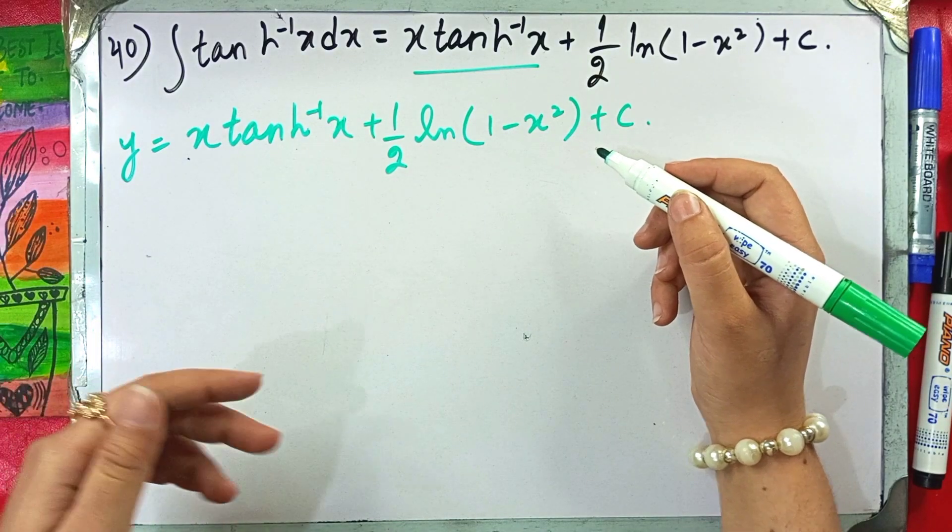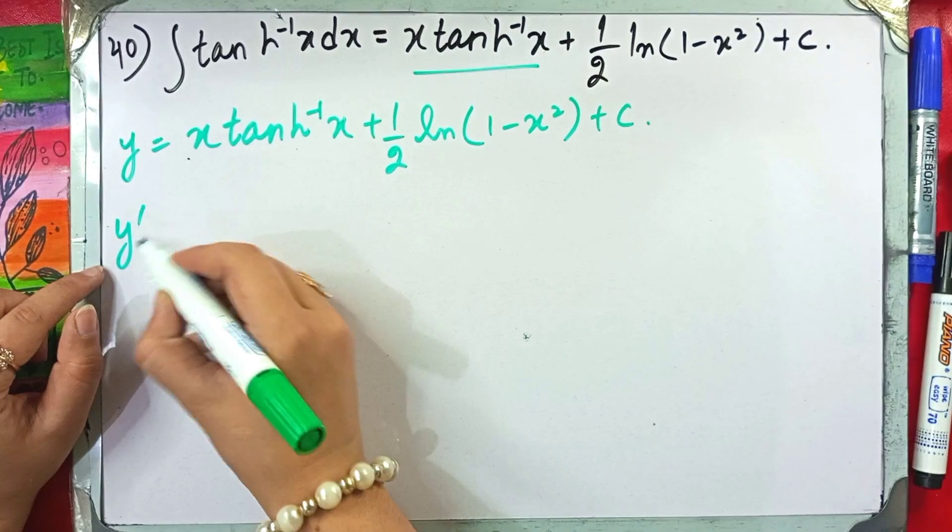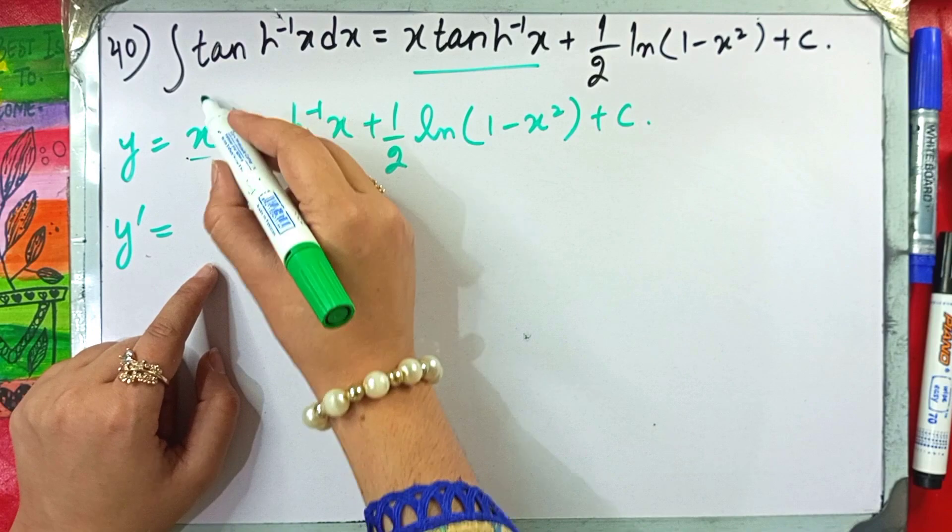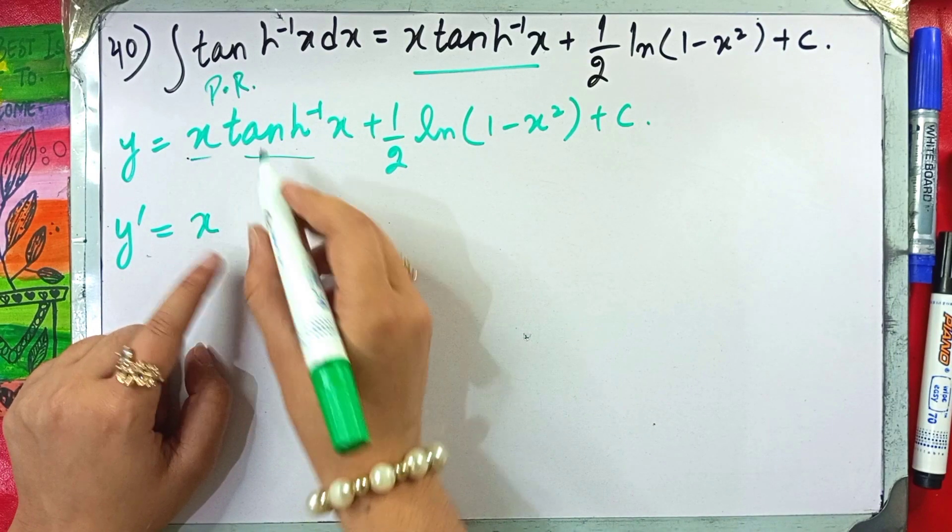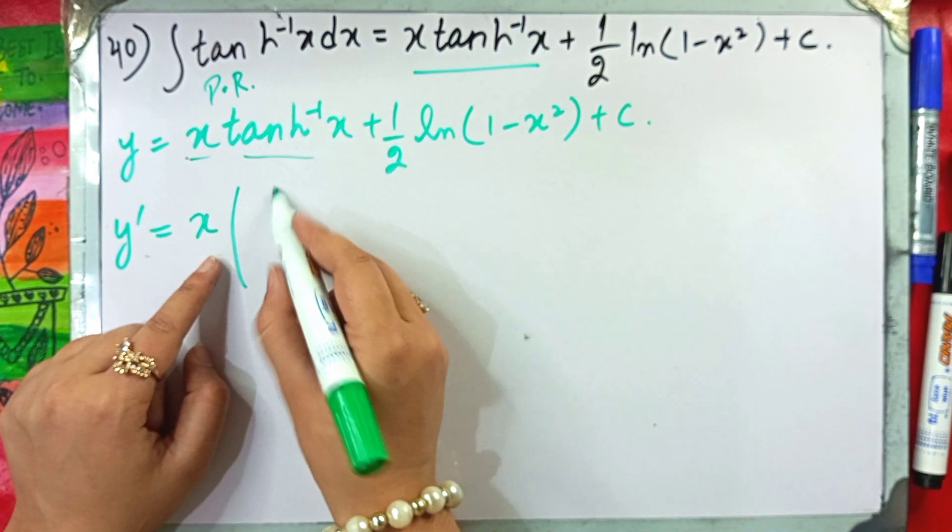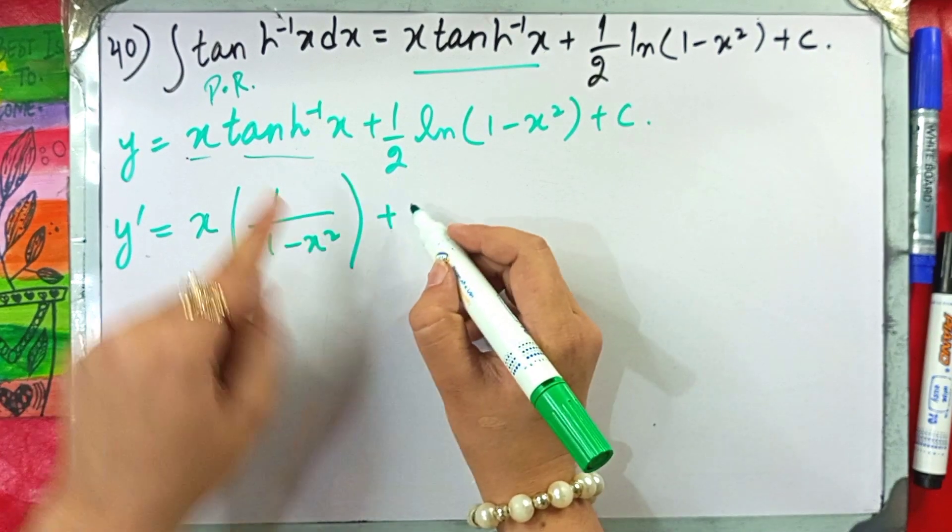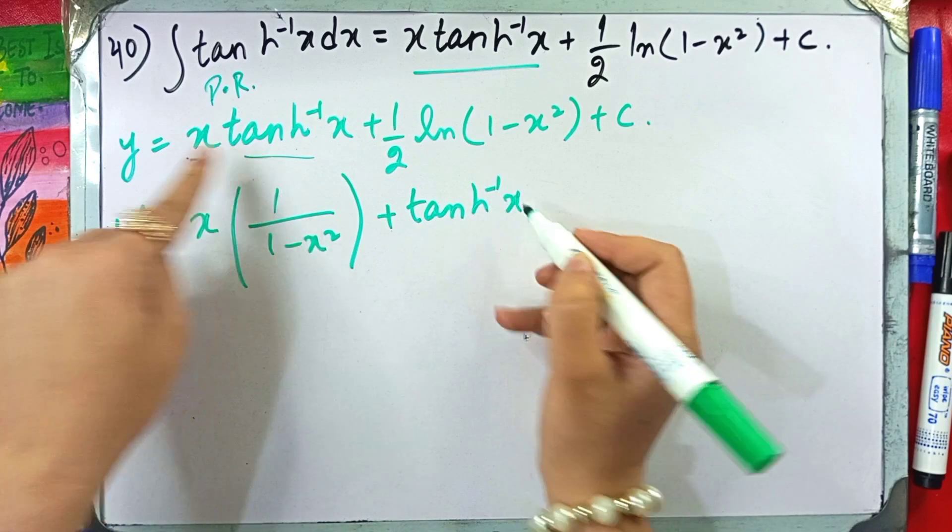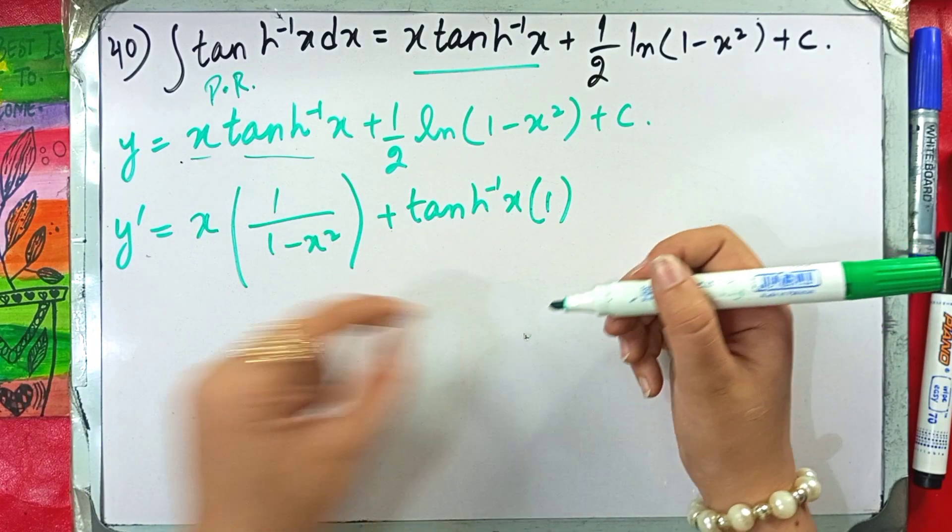Now we will start with the derivative with respect to x. So this will be y prime equal to two functions, polynomial and trigonometric, so product rule. First function into derivative of second function. What is the derivative of hyperbolic inverse? 1 by 1 minus x square plus tangent as it is. And what is the derivative of x? It is 1. We don't need to look at it, but let's look at it.